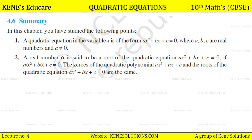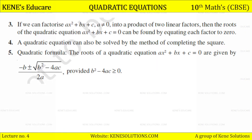In this chapter you have studied the following points: A quadratic equation in variable x is of the form ax² + bx + c = 0, where a, b, c are real numbers and a ≠ 0. A real number alpha is a root of ax² + bx + c = 0 if aα² + bα + c = 0. The zeros of the quadratic polynomial ax² + bx + c and the roots of ax² + bx + c = 0 are the same. The quadratic formula is x = (−b ± √(b²−4ac)) / 2a, provided b²−4ac ≥ 0.